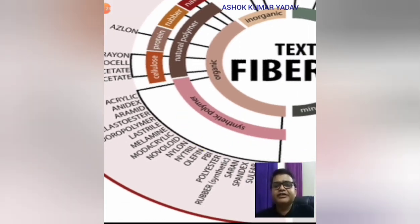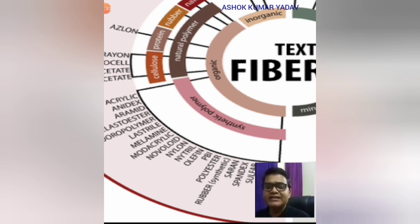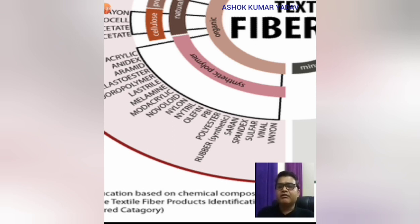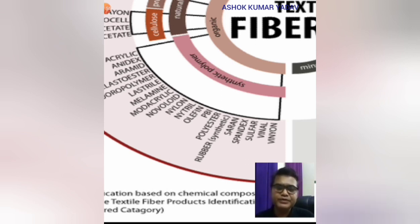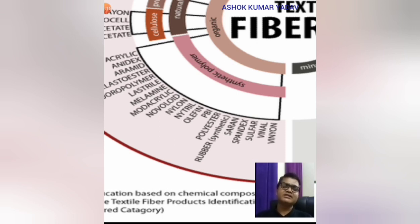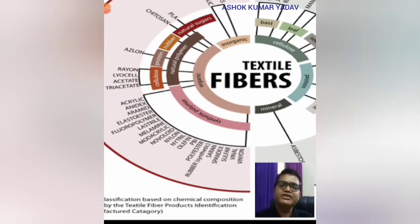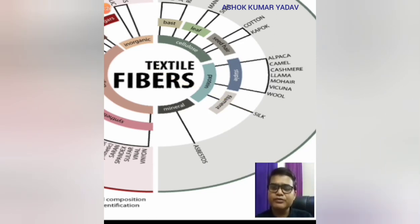Now, coming to the synthetic polymers — the smallest units are joined together to make a large chain. These are a vast category that is man-made fiber. Examples include acrylic, anidex, nylon, polyester, spandex, and vinyl polyester. These are the different examples of synthetic fiber, purely synthesized from chemicals inside the lab in the presence of chemical reagents and catalysts. It is totally man-made synthetic fiber. The fiber asbestos is produced from minerals. These are the different fibers classified on the basis of chemical property.